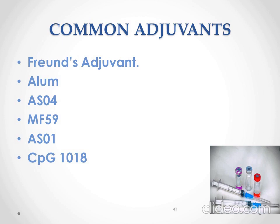CPG1018 is a recently developed adjuvant used in the Heplisav-B hepatitis vaccine. It is made up of cytosine phosphoguanine (CpG) motifs, which are a synthetic form of DNA that mimics bacterial and viral genetic material. When CPG1018 is included in a vaccine, it increases the body's immune response.